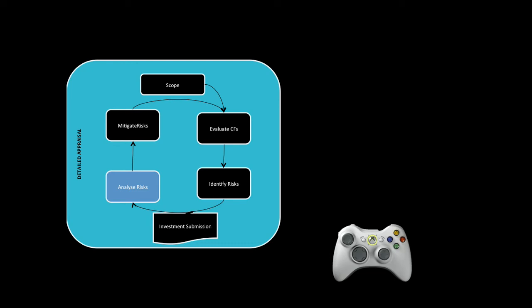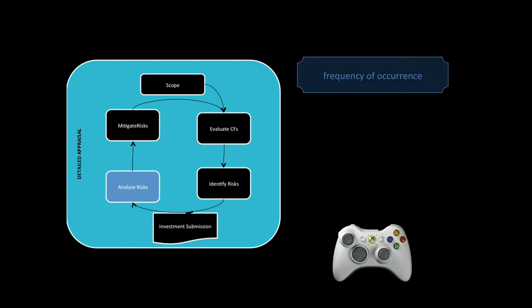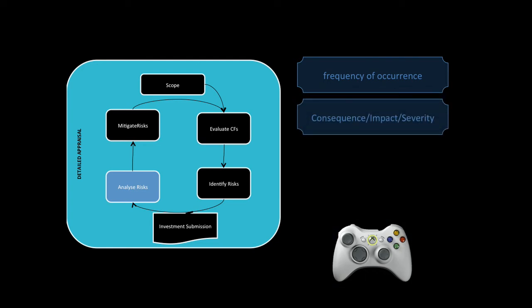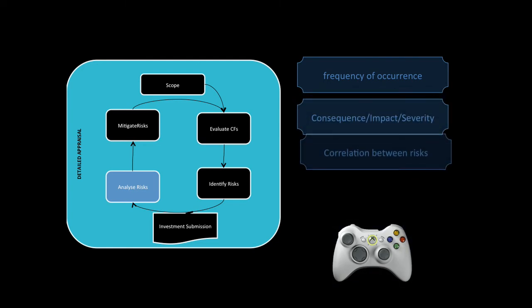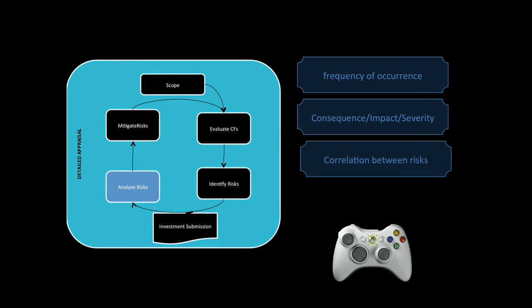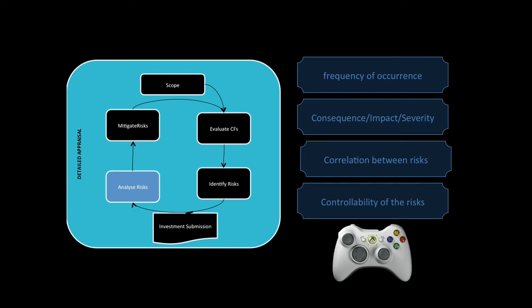Then you can analyze the risks. Analyze the risk by the frequency of occurrence, consequence, impact, and severity, which is basically the same thing. So frequency, consequences, correlation between risks, and how are you going to control them.